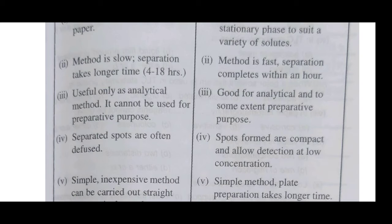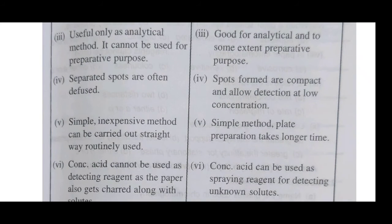The fifth point: paper chromatography is a simple and inexpensive method because it requires only Whatman filter paper, so it can be carried out straightforwardly and routinely. In thin layer chromatography, it is also a simple method, but plate preparation takes a longer time. In paper chromatography, no plate preparation is needed — only a paper strip is used.